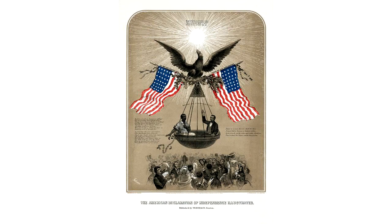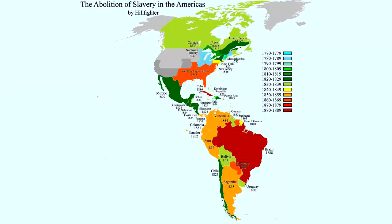When the creole elites of other countries contemplated independence, they were trapped between those two very different extremes. As a consequence, societies with more enslaved people took longer to gain their independence.